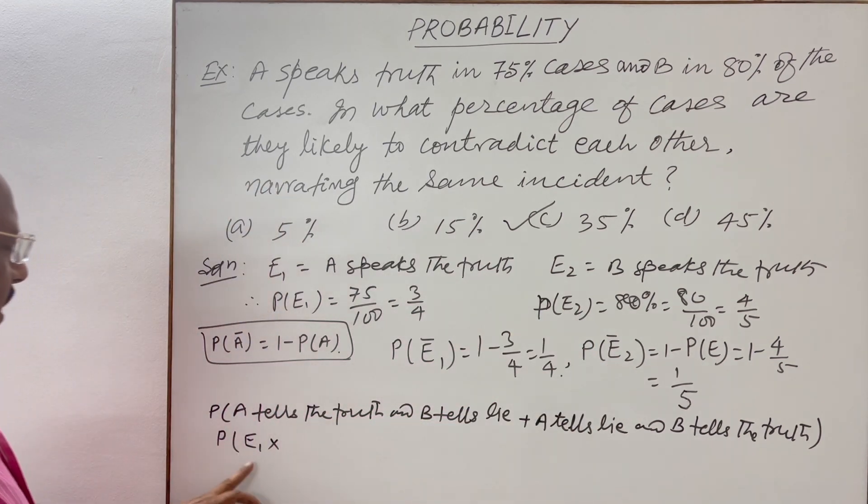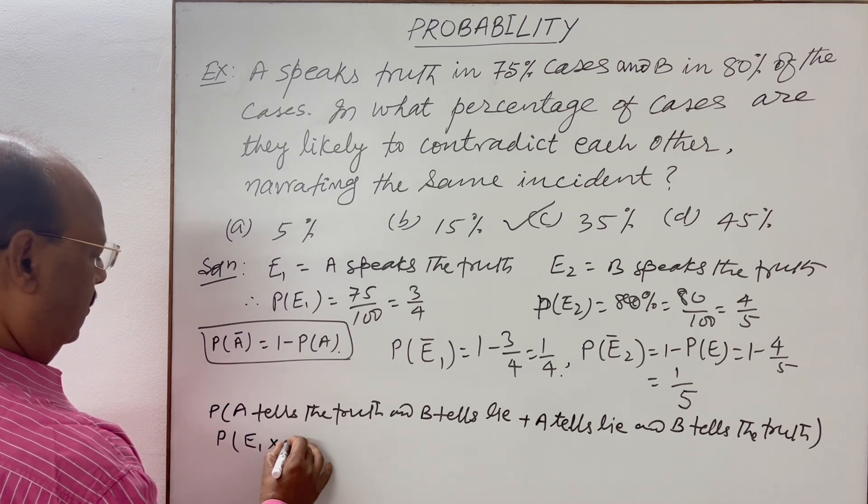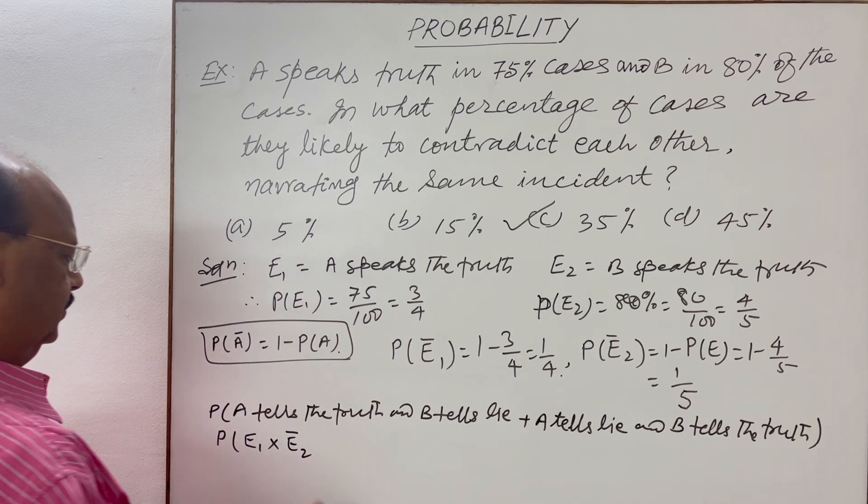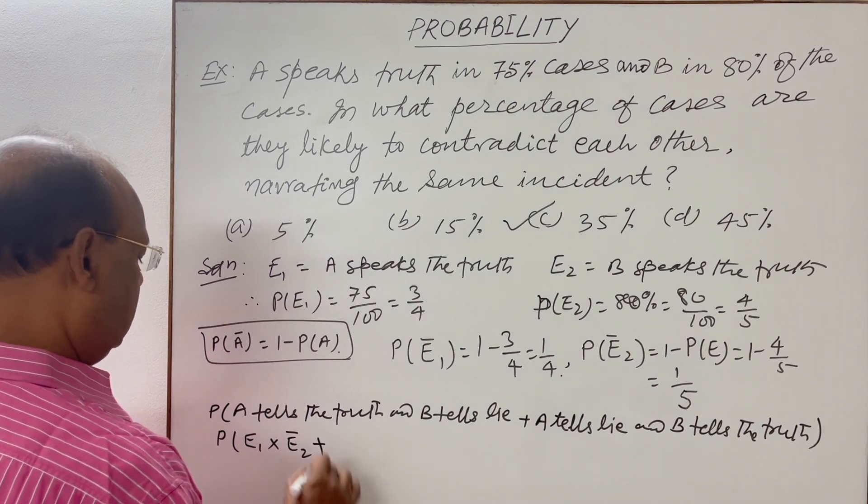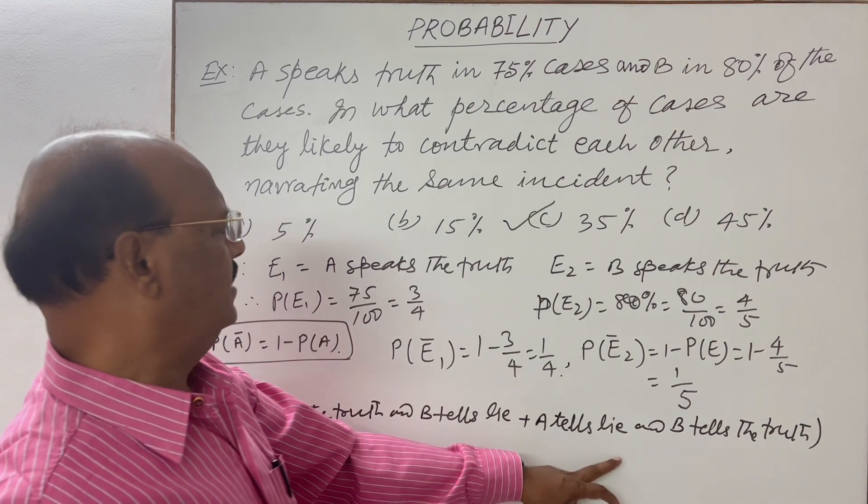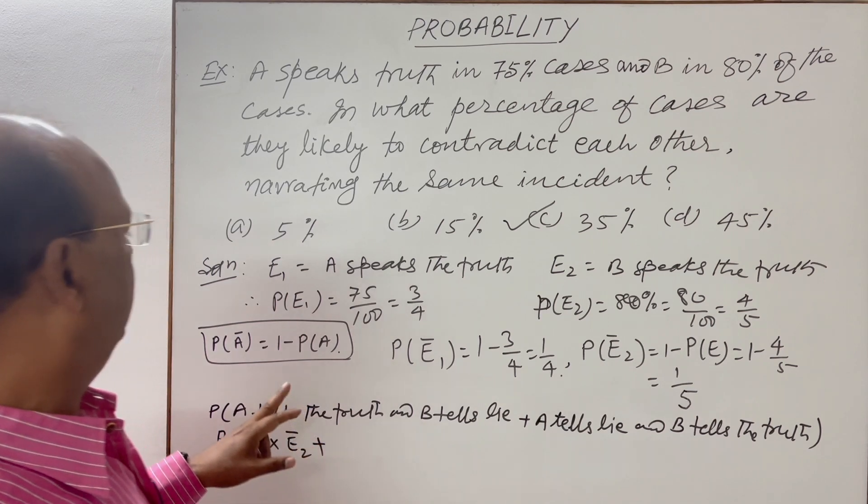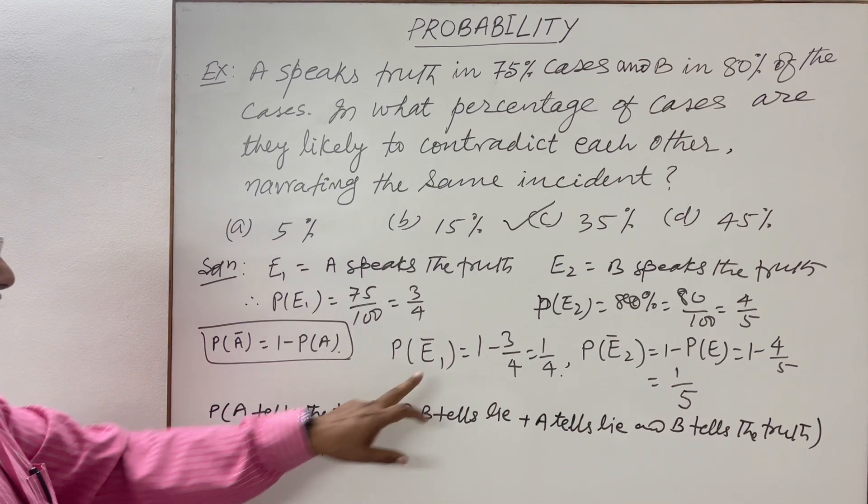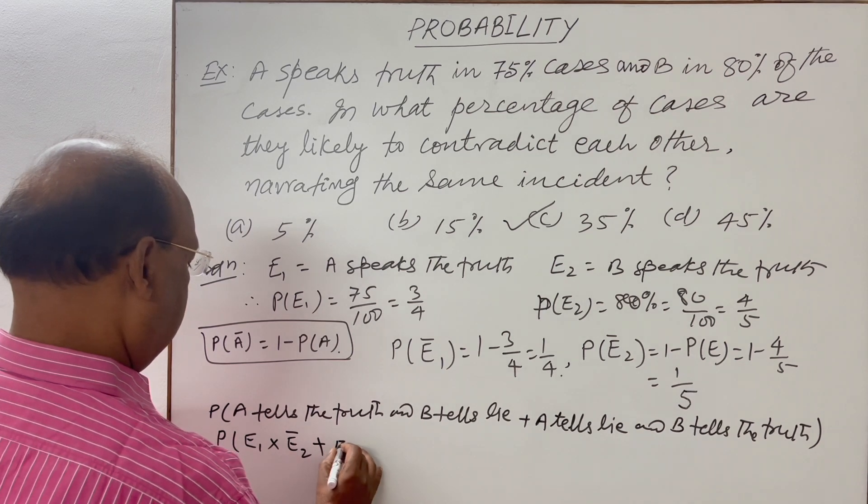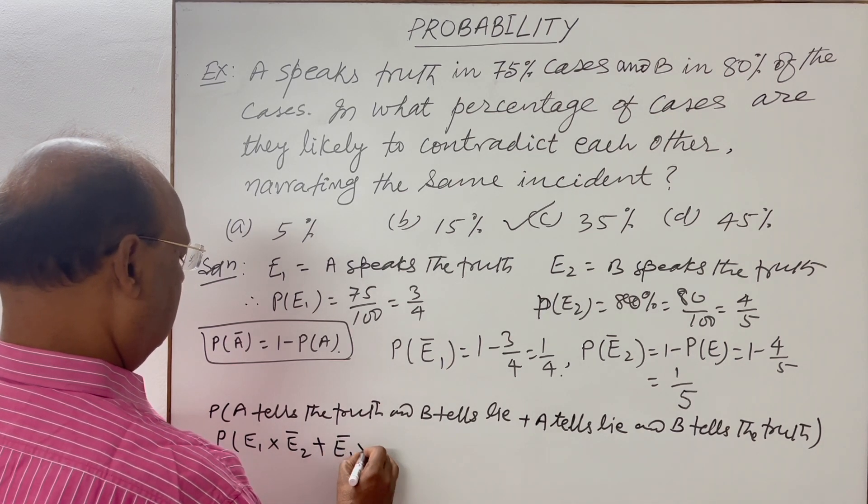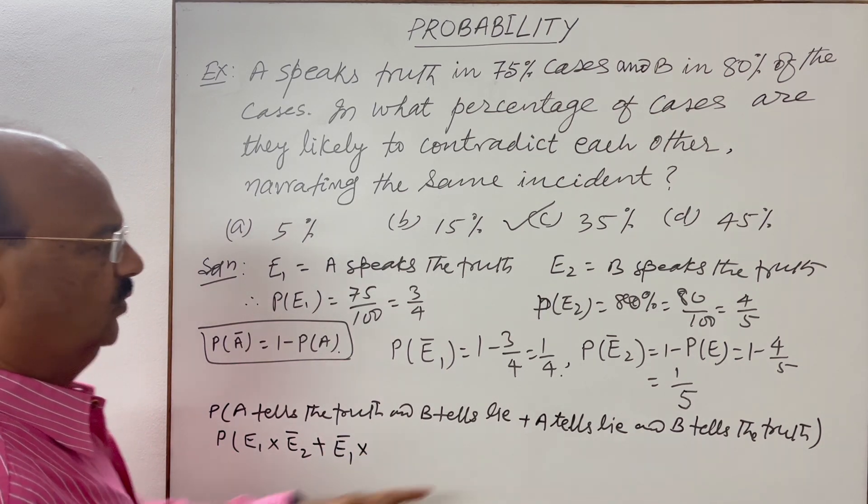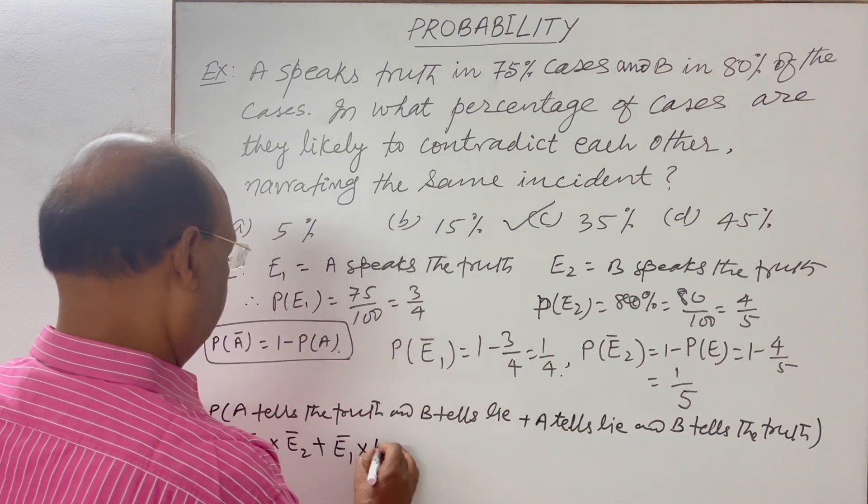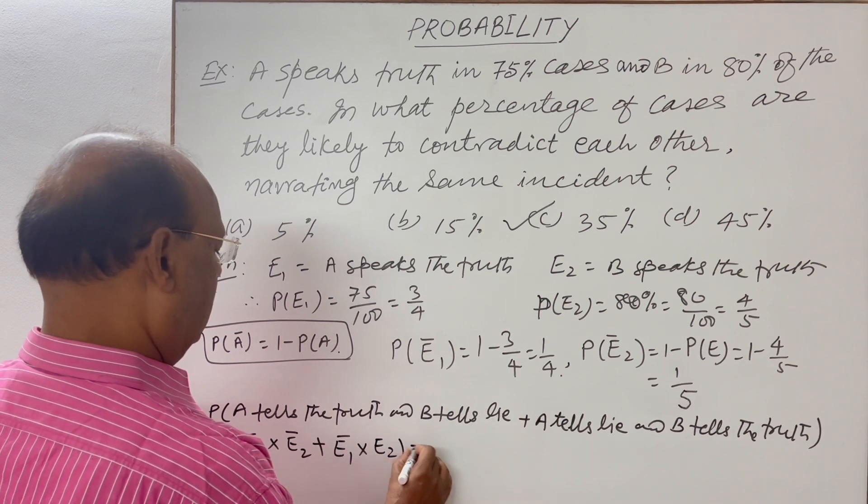So P(E₁) into not E₂ plus A tells lie, that will be not E₁. This is not E₁ into B tells the truth, B speaks the truth is E₂.